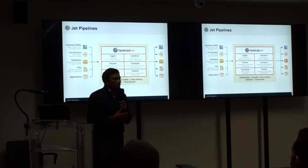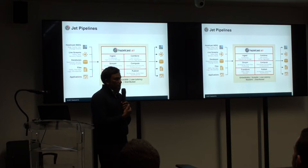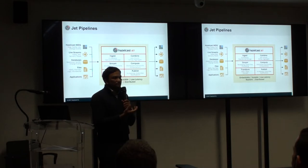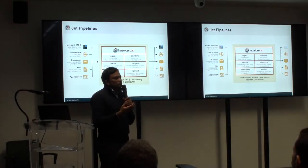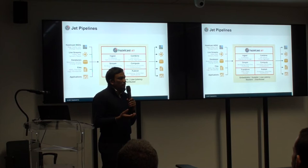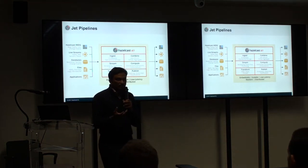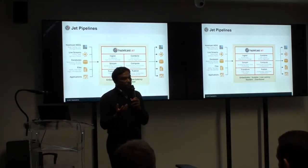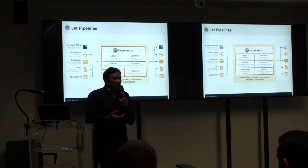If we look at Jet from a very high-level point of view, as you can see in the diagram, you basically collect data from various sources — like Kafka, a database, or any stream of data — then you are effectively transforming it, or enriching it, or doing some computation or aggregation of that data, and then pushing it out to execute some outcome.